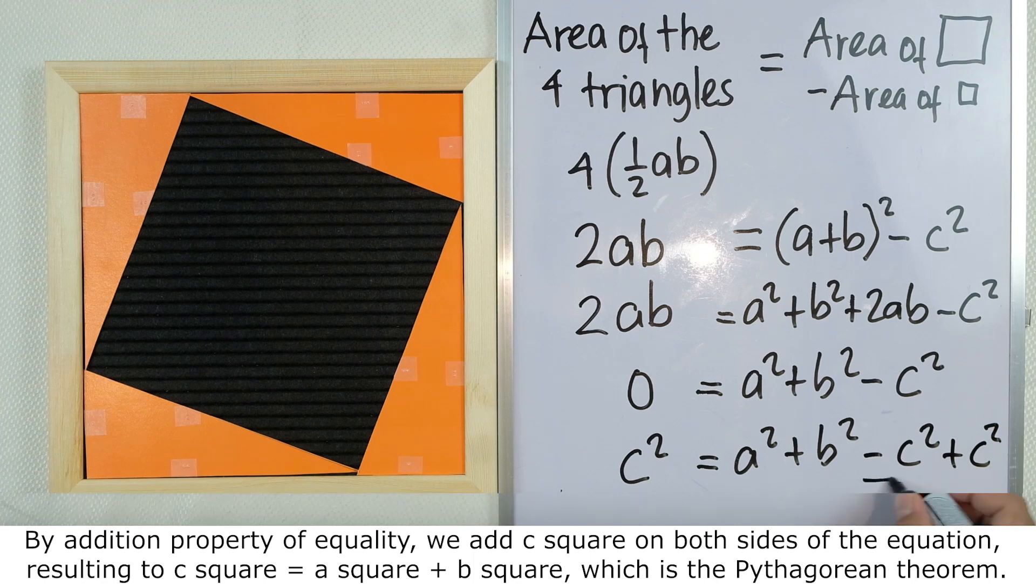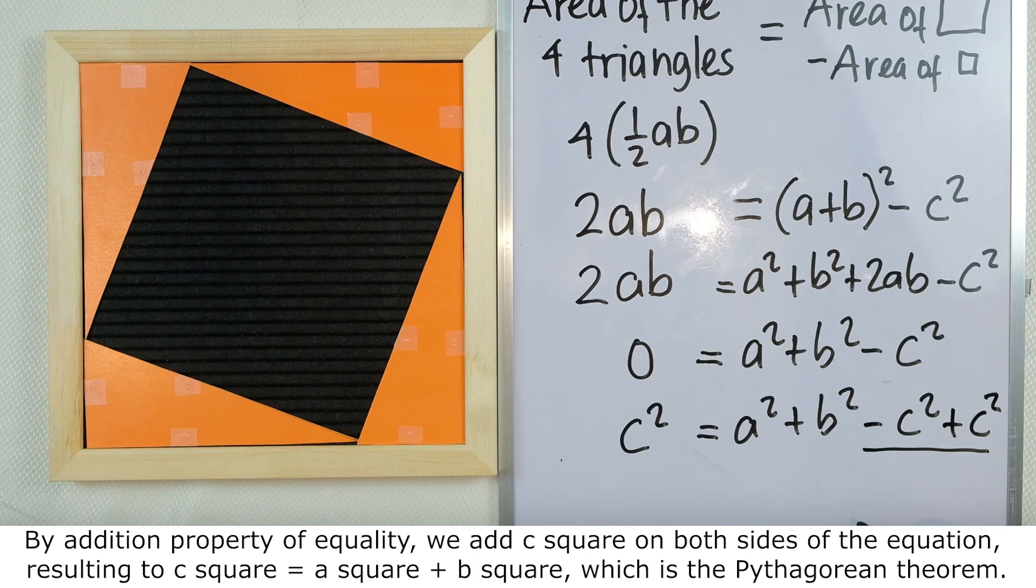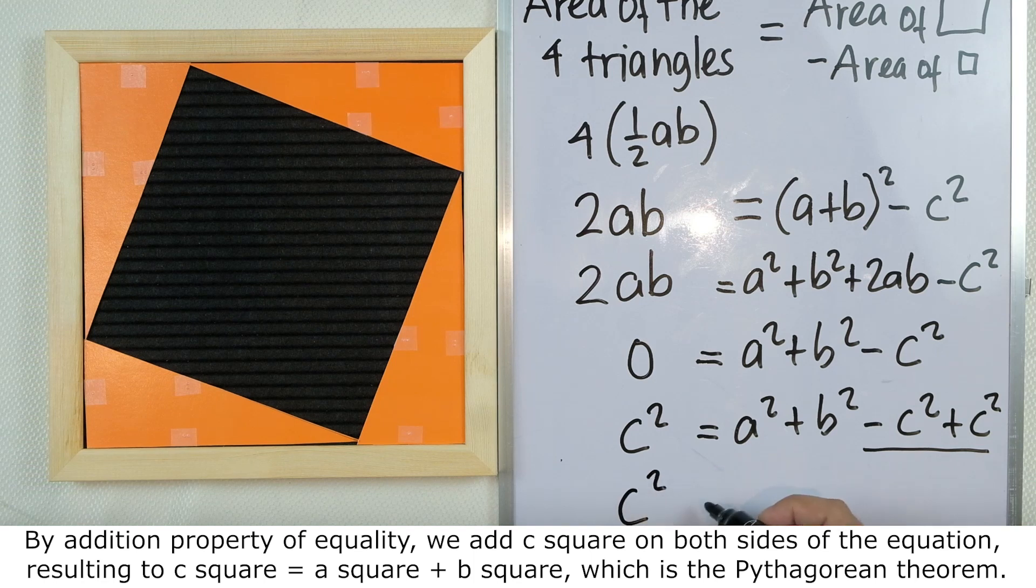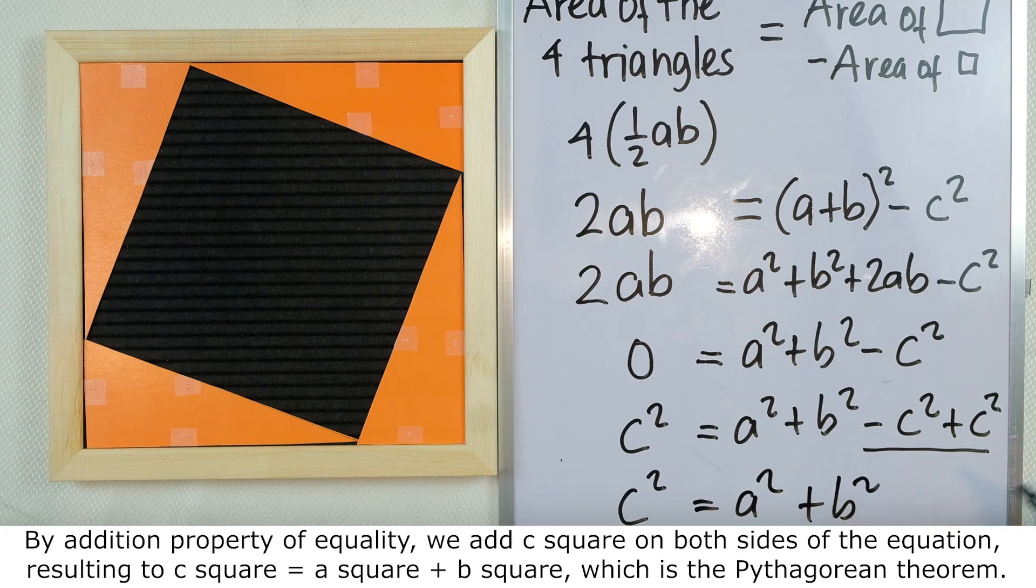And again, -c² + c² is just 0. So this can be further simplified as c² = a² + b², which is our Pythagorean theorem.